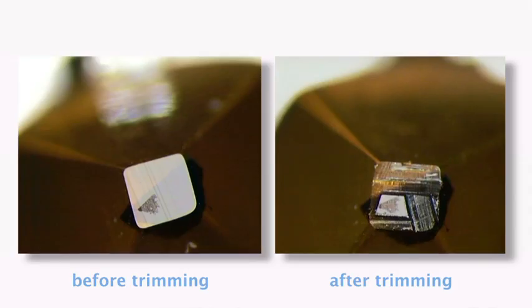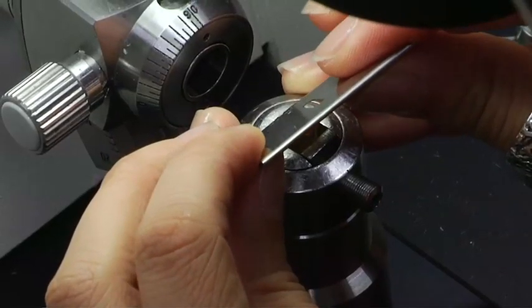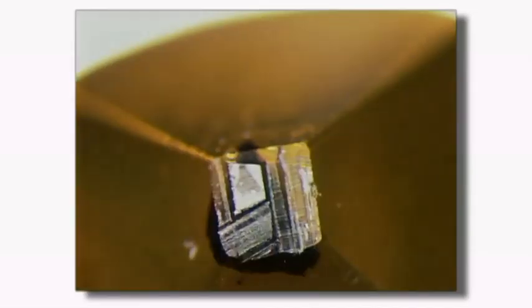Trimming is a process of removing excess resin surrounding the sample and sculpting the block face so that sections form a ribbon when coming off the knife. The block is then trimmed to a trapezoid shape with a razor blade for semi-thin sectioning.